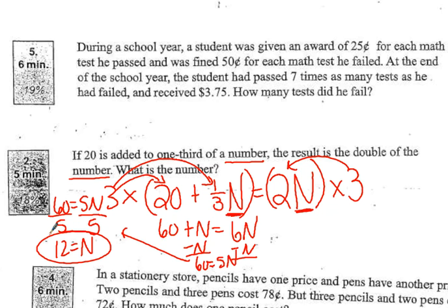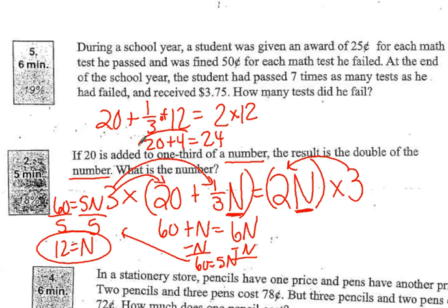And we could double-check that by saying 20 plus one-third of 12 is supposed to equal 2 times 12. Well, 20, one-third of 12 is 4. So, I get 20 plus 4. 2 times 12 is 24. 20 plus 4 equals 24. So, I know I have the right answer.